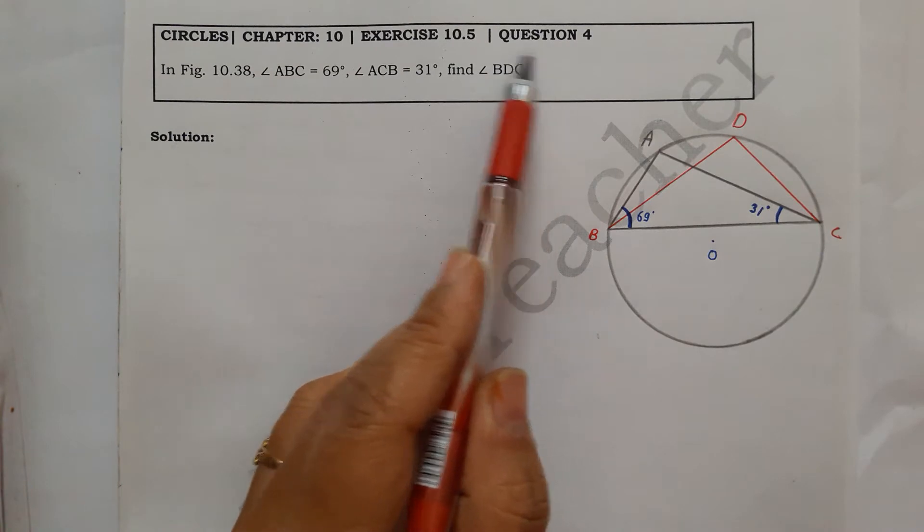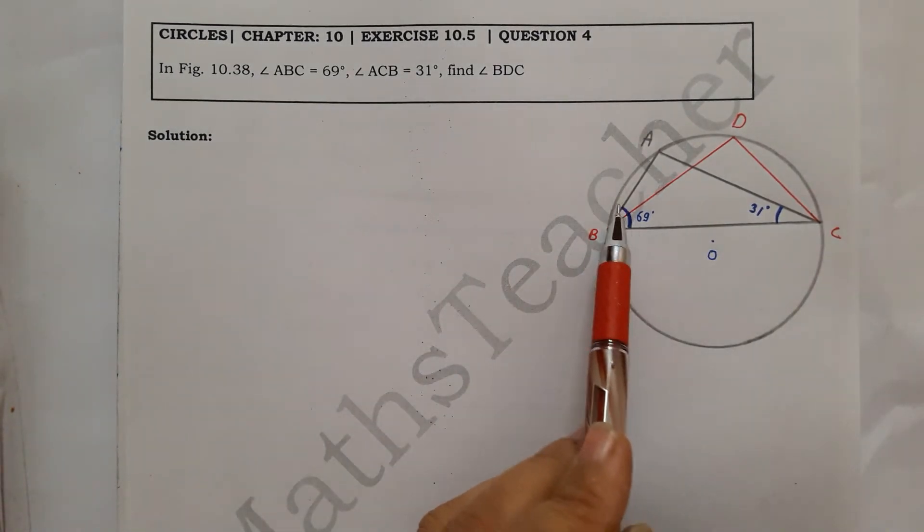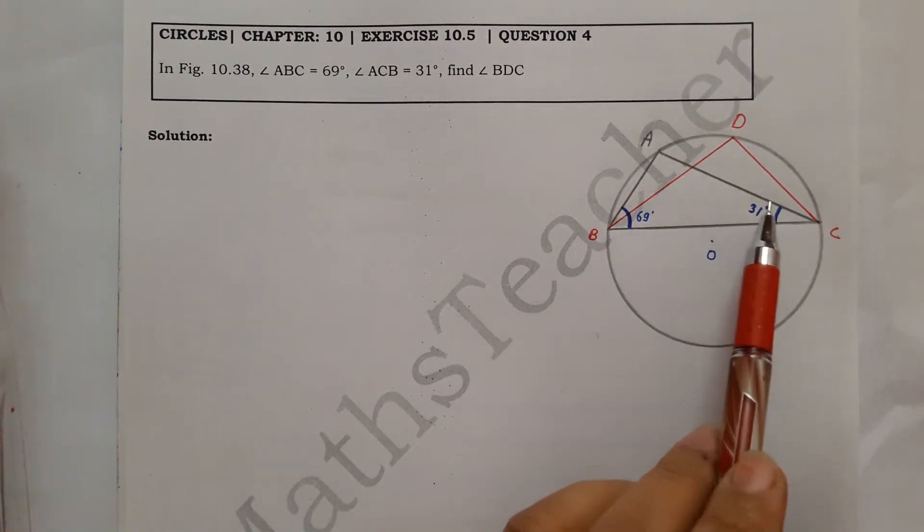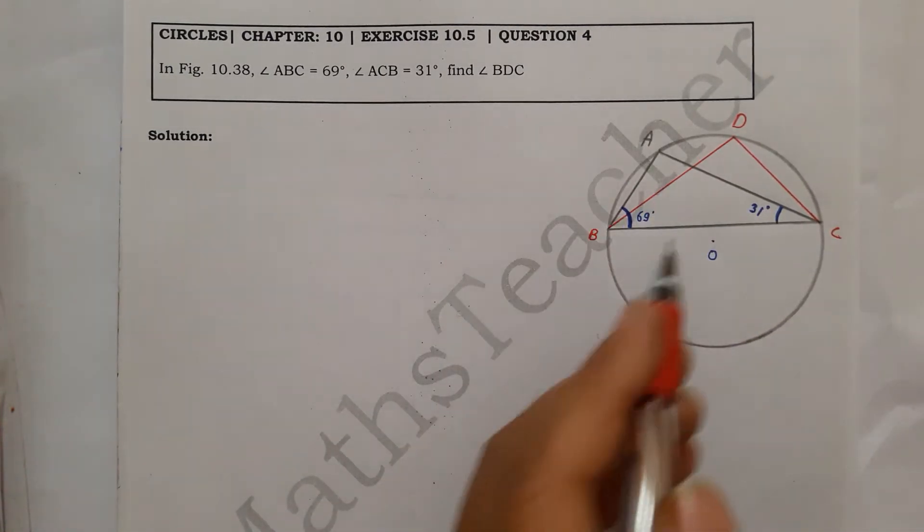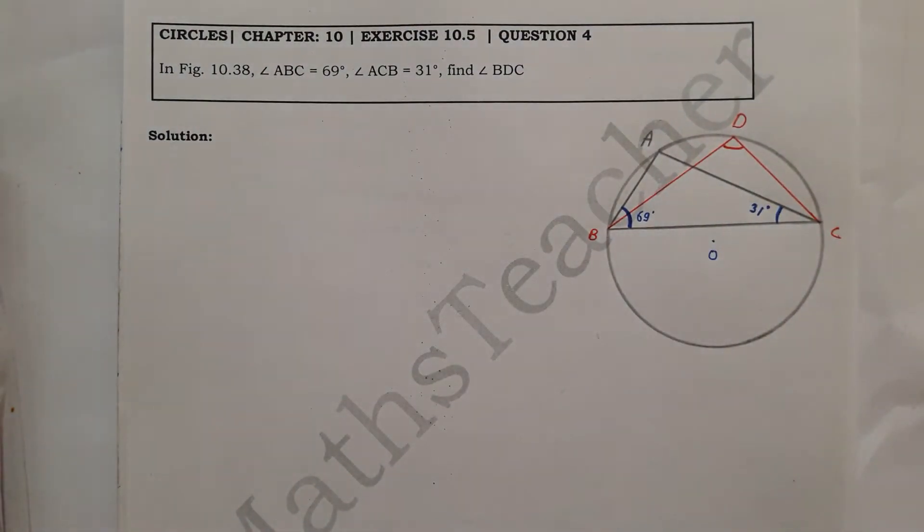The figure is given. In this figure, angle ABC = 69 degrees, angle ACB = 31 degrees, and we need to find angle BDC - this angle here. Just now we have done theorem 10.9: angles in the same segment of a circle are equal.